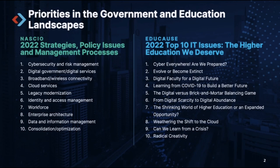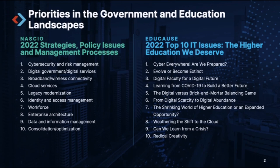Also on the list: digital government and digital services. In this space, we're really thinking about things like digital transformation and a focus on the constituent experience — how can we make government more accessible? Broadband and wireless connectivity are critical issues for state CIOs as well, not just for their own agencies, but also in their states. There are still a lot of areas of the country that suffer from poor broadband, which gives them a significant economic disadvantage. And of course, cloud services are always going to be on the list — how can governments do better in terms of cloud adoption in a strategic way?